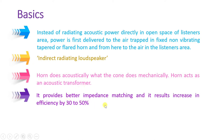Horn acts as an acoustic transformer. It provides better impedance matching and results in efficiency increase of 30 to 50 percent. The efficiency of cone type loudspeaker is about 5 percent only, but with horn type loudspeaker efficiency increases to 30 to 50 percent.